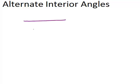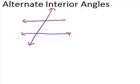In this video we will learn all about alternate interior angles. Alternate interior angles have to do with two lines and a transversal. When you have this situation there will always be two pairs of alternate interior angles.